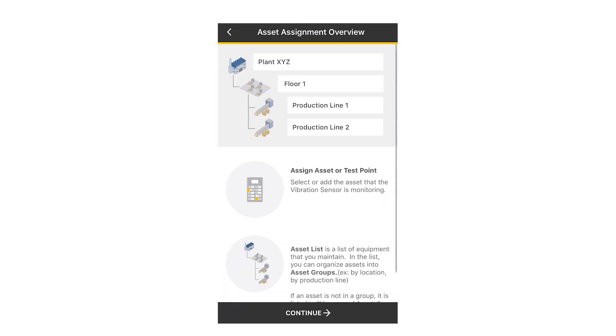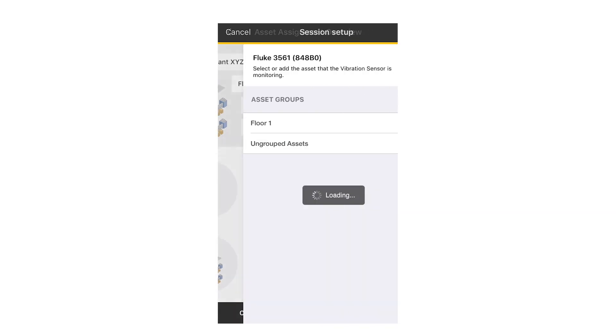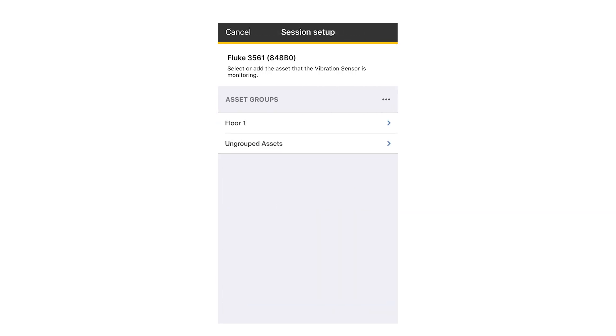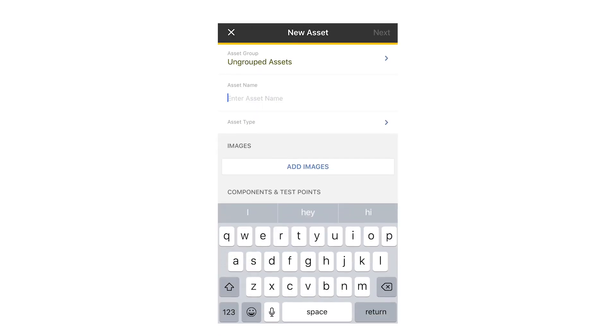The last step before applying the sensors is defining the machine type. Fluke Connect uses this information to send you alarms. Follow the on-screen prompts to define and organize your assets.